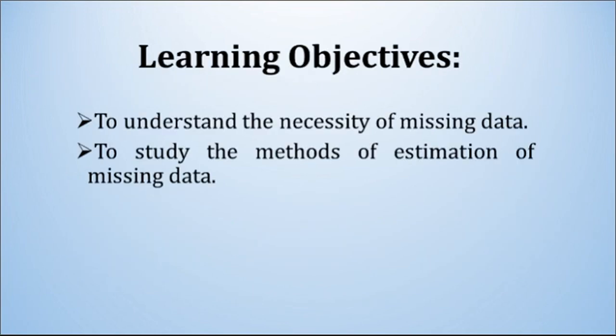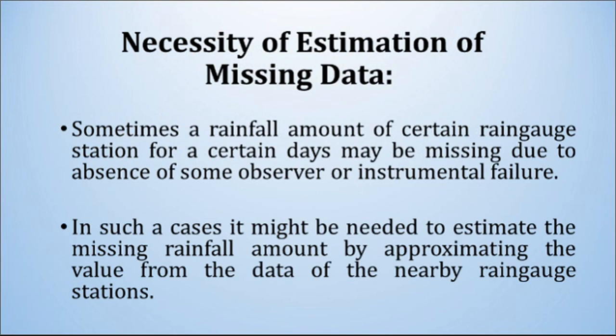The learning objectives of today's session are: to understand the necessity of missing data, and to study the methods of estimation of missing data. Sometimes the rainfall amount at a certain rain gauge station for certain days may be missing due to absence of an observer or instrumental failure.